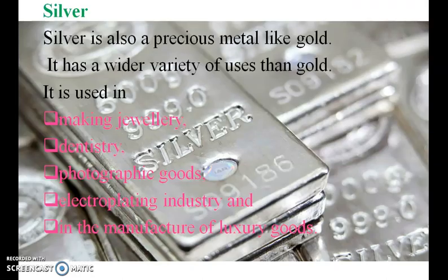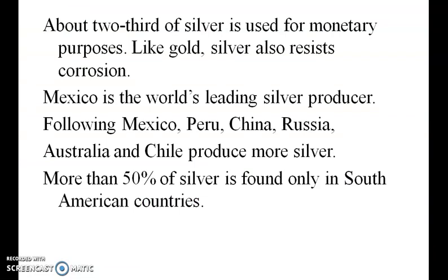Silver is a precious metal like gold and has a wide variety of uses next to gold. It is used in making jewelry, dentistry, photography, electroplating industry and manufacturing luxury goods. Mexico is the world's leading silver producer, followed by Peru, China, Russia, Australia and Chile. More than 50% of silver is found only in South American countries.